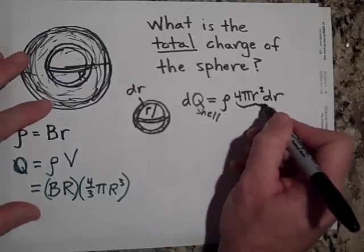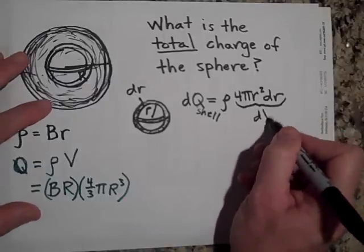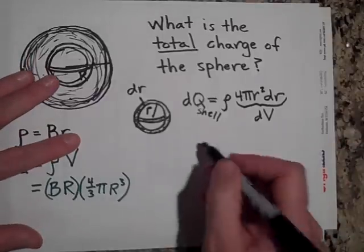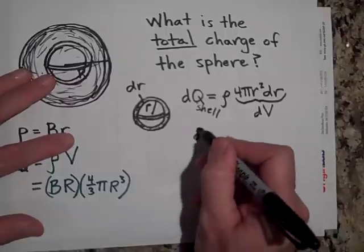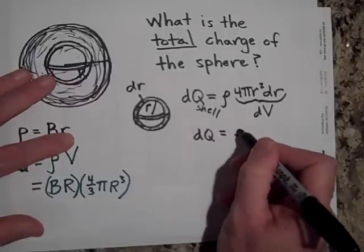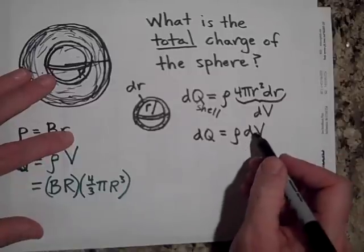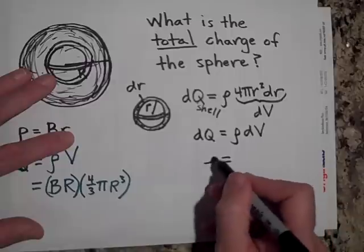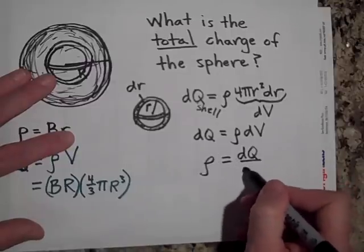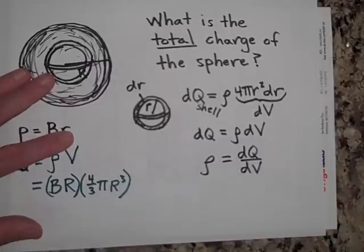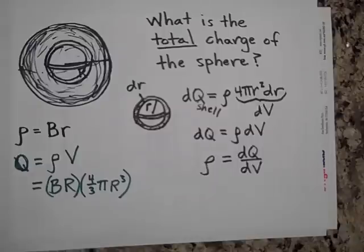This is a little volume, dV. In fact, we can say that, yeah, dQ is equal to rho dV. Or another way of saying it is rho is equal to dQ over dV.